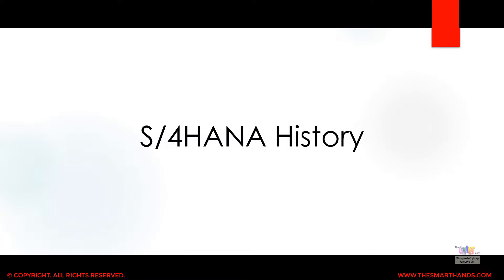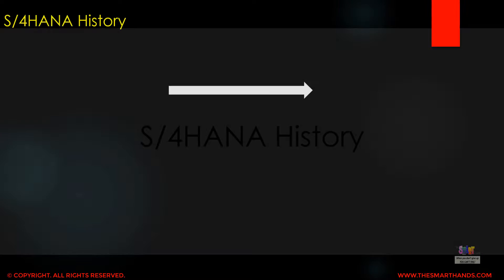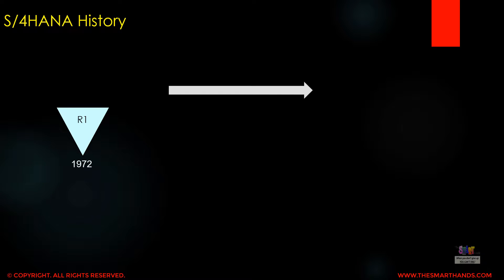We're talking about the whole history starting with when SAP started their first product up to the latest product which is S4 HANA. In 1972 SAP started with the R1 system, which was the first SAP version and it was a one-tier system. It was a very basic system and any database could be used for it.